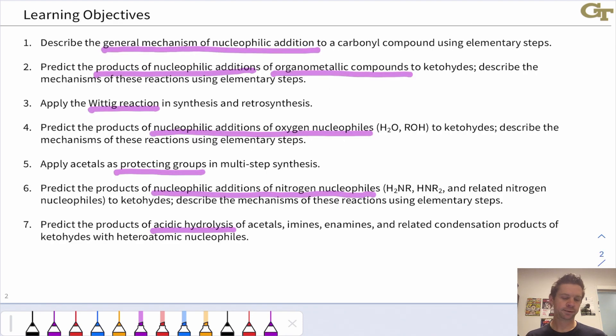Our learning objectives: we'll start with the general mechanism of nucleophilic addition. We'll really focus on addition of nucleophiles to polarized pi bonds, that AD sub N elementary step, which is the key to a lot of these reaction mechanisms.